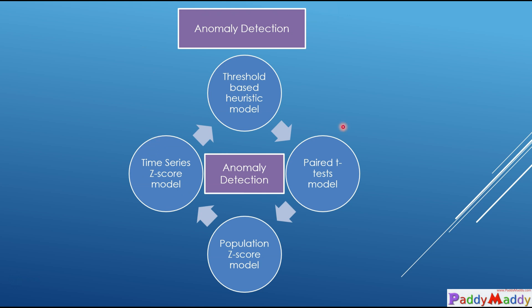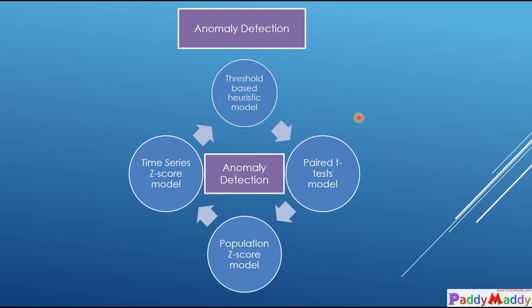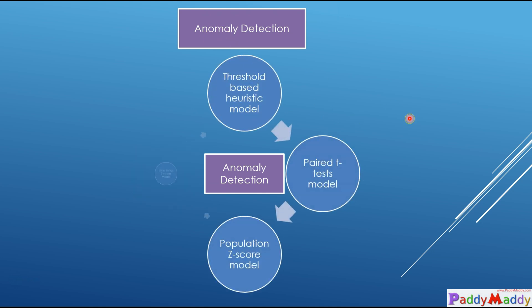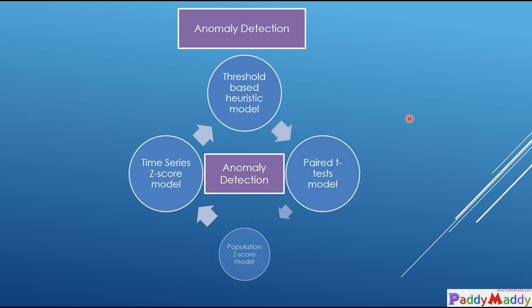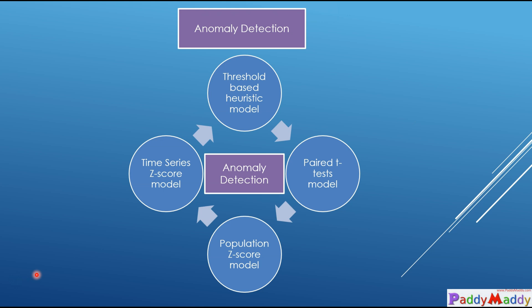These are the four detection models used for anomaly detection. By using these models, it helps you detect what kind of stop errors are occurring and what issues end users are facing, so you can take action directly from the console by creating and pushing remediation PowerShell scripts from Intune.